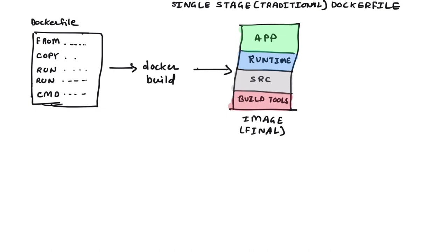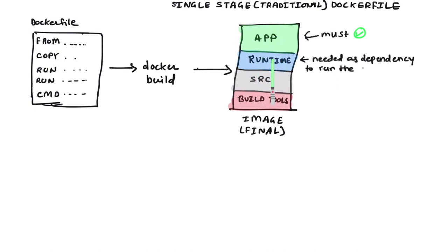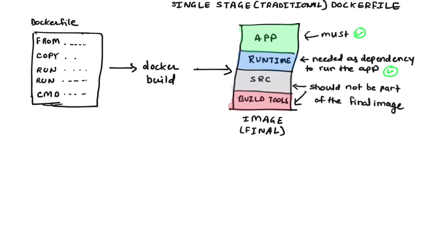Now let's look at what components are needed in your final image and what are unnecessary. You definitely need your application — that's what you're building this image for. Along with the application, you also need the runtime dependencies including libraries or any other binaries. You may also need the minimal base operating system files. However, you should not have the source code in a compiled application — for example Golang, C or Java. You also do not need build tools like Maven, GCC, Make, etc. The final image can contain just the application, the runtime, and the base operating system if required.